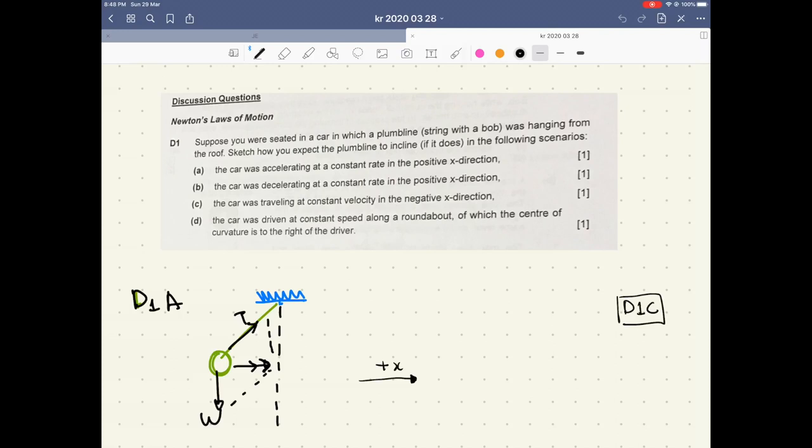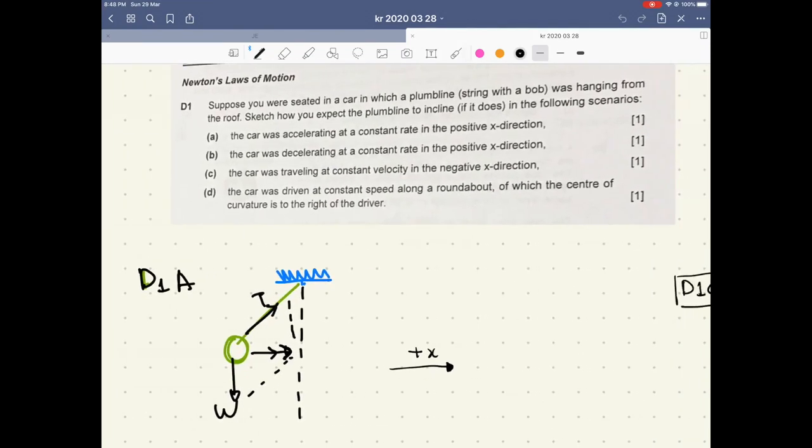Discussion 1. Suppose you were seated in a car in which a plumb line, and plumb line is a string with a bob, was hanging from the roof. Sketch how you expect the plumb line to incline, if it does, in the following scenarios. Question A, the car was accelerating at a constant rate in the positive x direction. I will draw the sketching plumb line here.